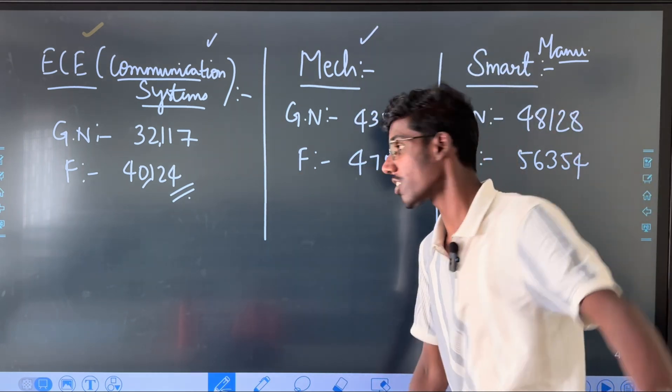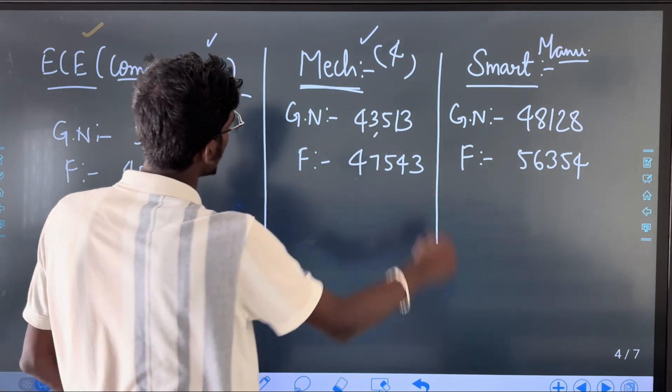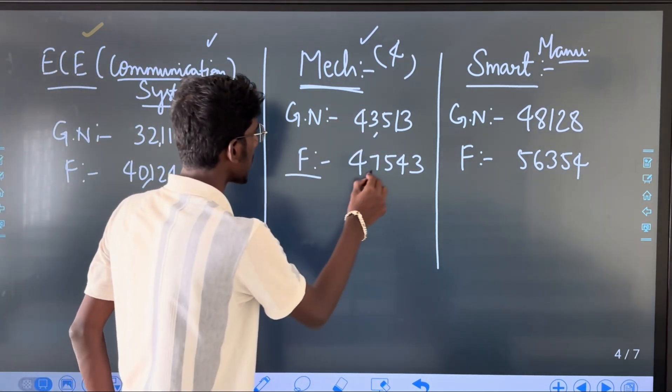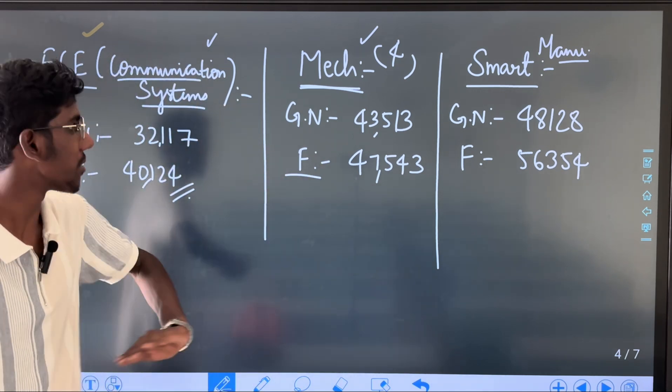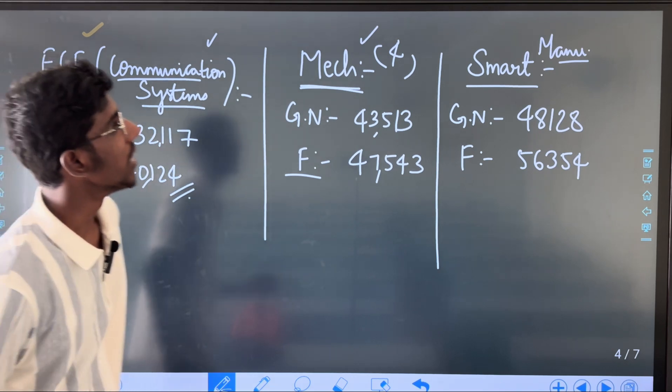Next, Mechanical. Mechanical 4 years course - General Neutral Category is 43,513. Female Category is 47,543. This is the number. If you are 4 years ranked, the rank difference is around 4,000.